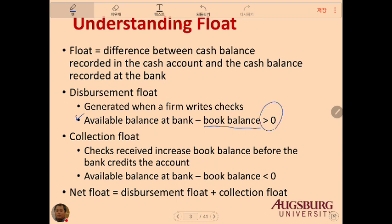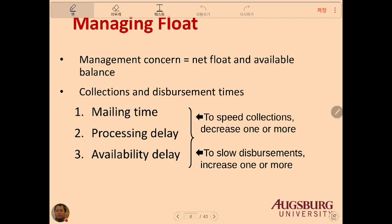Collection float is when a received check increases the book balance before the bank credits the account. When you receive a check, you increase your book balance, but the bank will not give you cash until the check clears — so collection float is typically negative. The net float is disbursement float plus collection float. If you have a higher net float, you effectively have a higher available cash balance at the bank even though you have used cash.